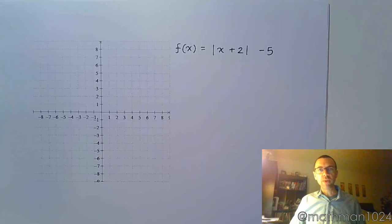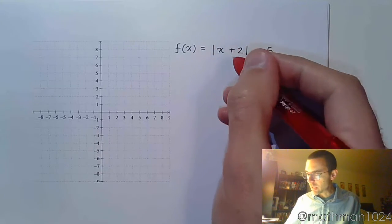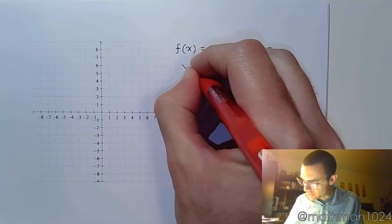Now, you see the absolute value, so the first thing we're going to identify is this shape. Absolute value tells me it's a v-shape.